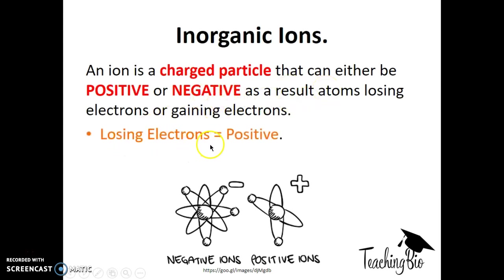If an atom loses electrons, it becomes a positive ion, and if an atom gains electrons, it becomes a negative ion.